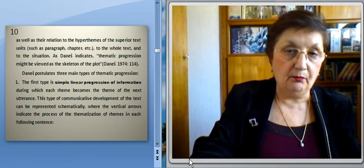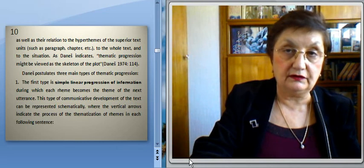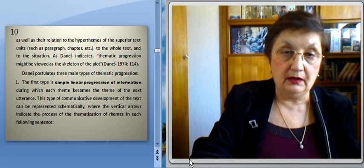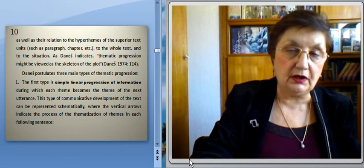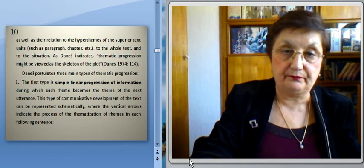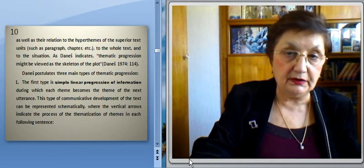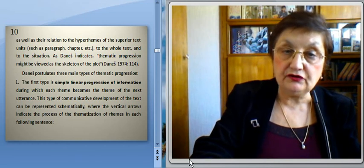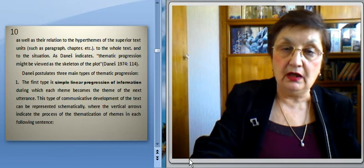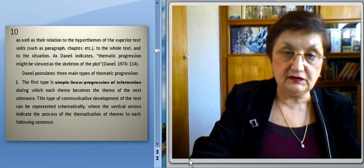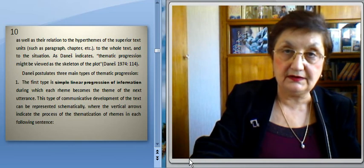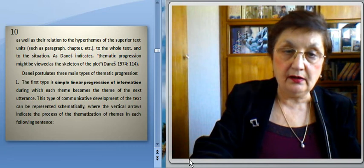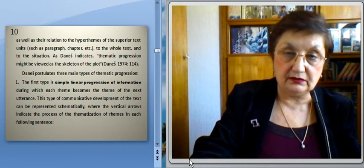Daneš postulates three main types of semantic progression. The first type is simple linear progression of information, during which each rheme becomes the theme of the next utterance. This type of communicative development of the text can be represented schematically, where the vertical arrows indicate the process of the thematization of rhemes in each following sentence. You see this scheme on your monitors.